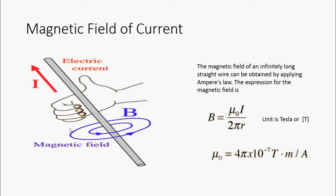I stands for current, R stands for the distance from the wire, and mu zero is the permeability of free space.